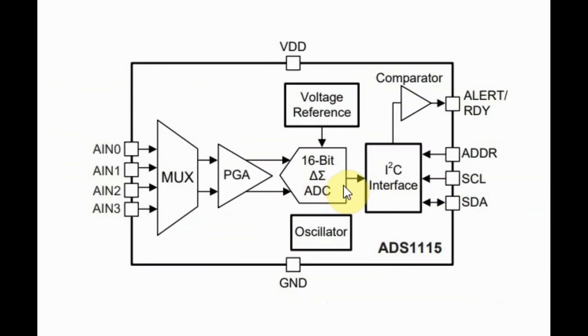The ADS-1115 also has a programmable digital comparator, where the analog input is compared with a voltage reference, and accordingly at the output of the alert and ready, there will be a signal which can be used to interrupt the microcontroller.